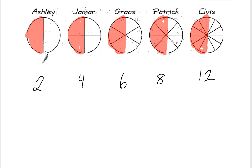So how many pieces did each child eat? Well, Ashley ate one out of her two pieces. Jomir ate two out of his four. Grace ate three of the six. Patrick ate four of the eight. And Elvis ate six of his twelve pieces.